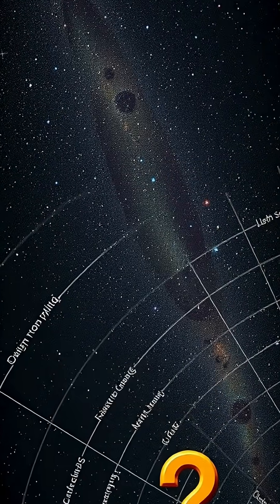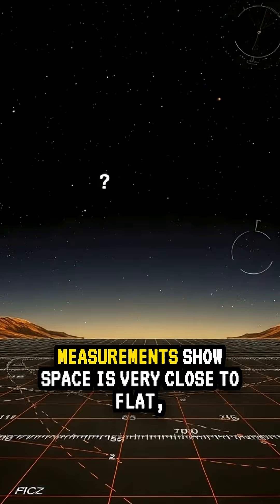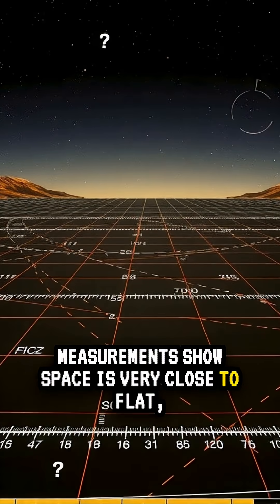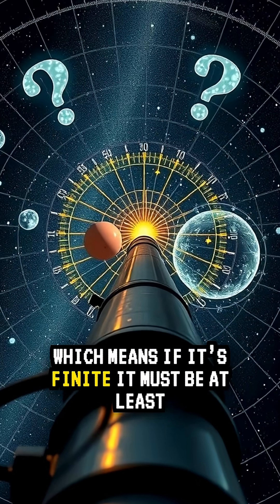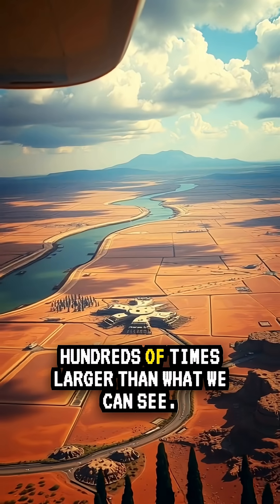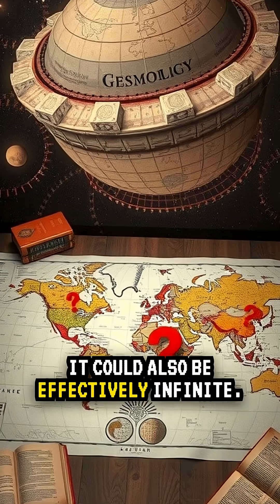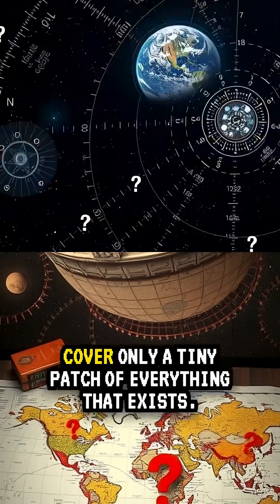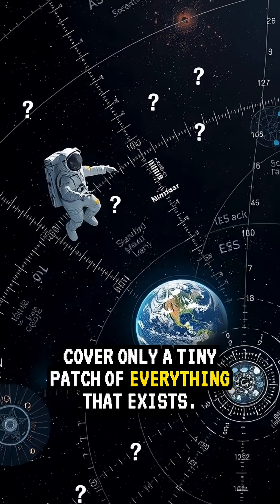So how big is the whole universe? We don't know. Measurements show space is very close to flat, which means if it's finite, it must be at least hundreds of times larger than what we can see. It could also be effectively infinite. Our maps cover only a tiny patch of everything that exists.